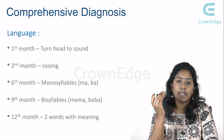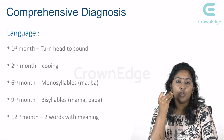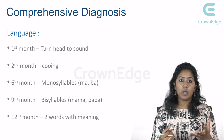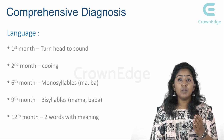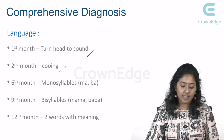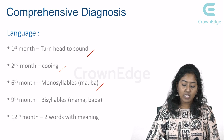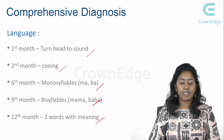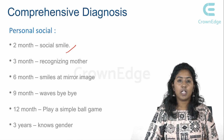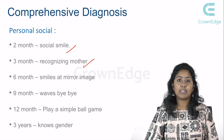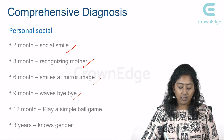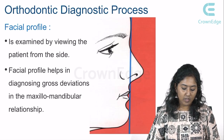In the language phase: at the first month infants respond to light and sound; at the second month they coo; at the sixth month they speak monosyllables; at the ninth month bisyllables; at the twelfth month two words with meaning. For personal-social development: second month — social smile; third month — recognizing the mother; sixth month — smile at mirror image; ninth month — waves bye-bye; twelfth month — plays simple ball game; three years — knows gender.